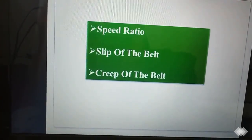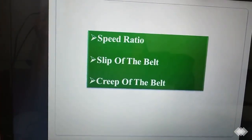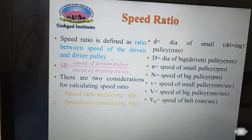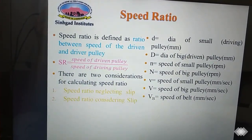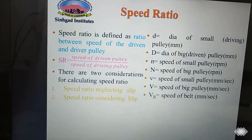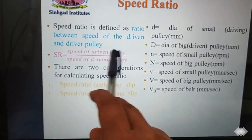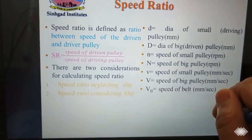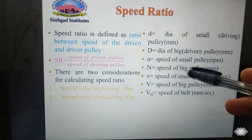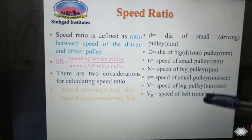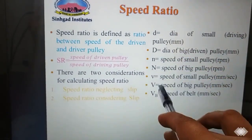Hello everyone, today we will start with the new topic of Unit 5: speed ratio in belt drive, slip of the belt drive, and creep of the belt drive. Let's begin from the speed ratio. We know the definition of speed ratio — it is the ratio between the speed of the driven pulley to the speed of the driver pulley. Now we are going to calculate the speed ratio of the belt drive without slip and with slip. First, we will calculate by neglecting slip.